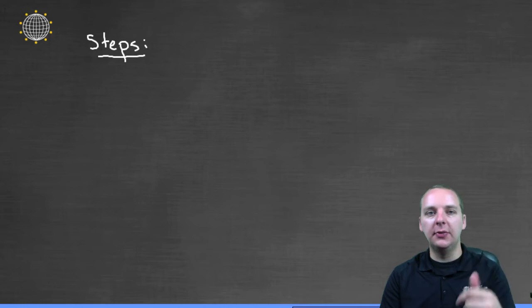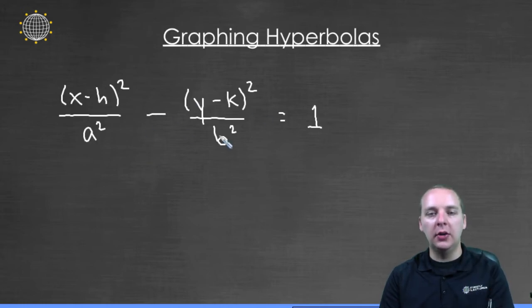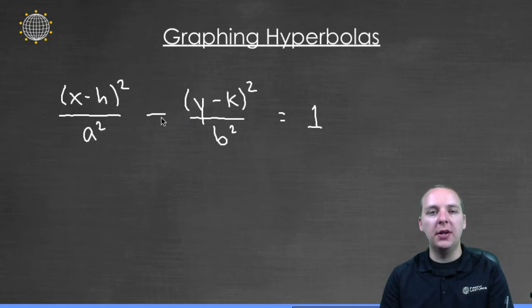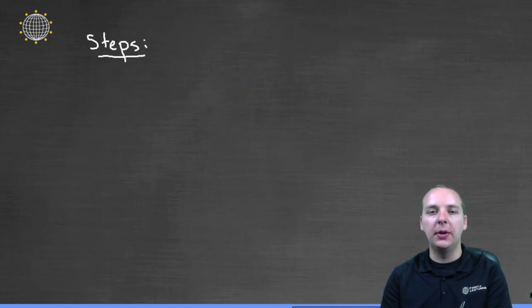So here's our list of hands-on steps. First thing you do when you're given an equation of a hyperbola is you find its center and you plot it. So the center is at h comma k and so that's usually pretty easy to read off of your equation. It's just h comma k and we'll plot that point.